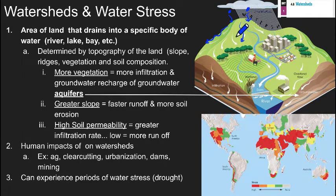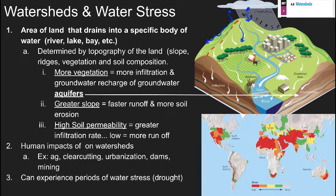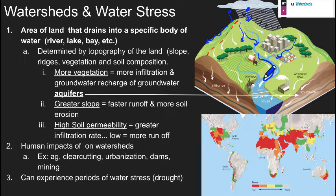If a raindrop falls on one side, it's going to follow the slope down that way, ultimately leading to different streams or rivers, carrying the water to different places. You can see this kind of divide — I'll mark this in red. This could be something like the Continental Divide through the Rockies, where if it falls on one side, it flows into the Colorado River; on the other side, it eventually ends up in the Mississippi River. This is what we mean by a watershed.